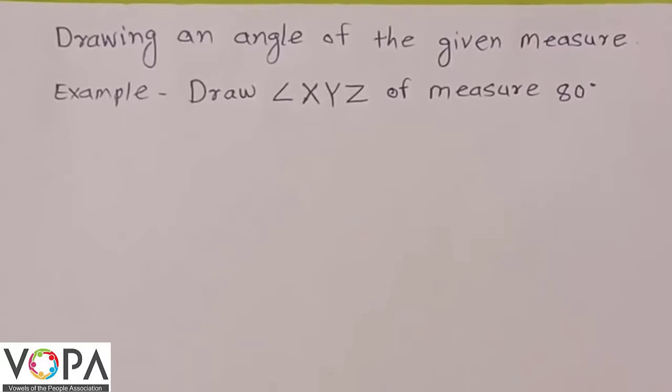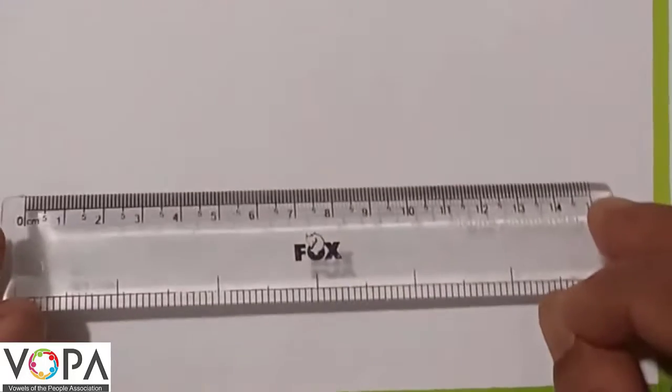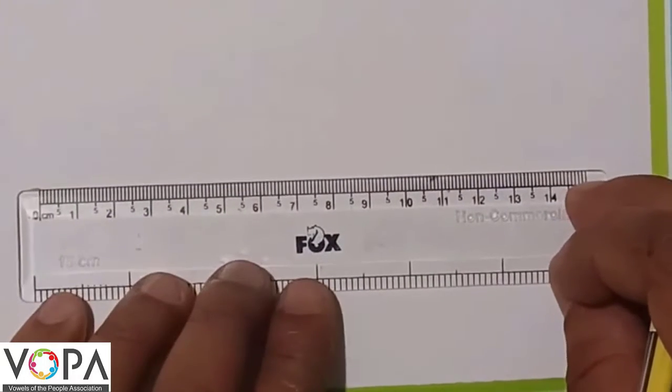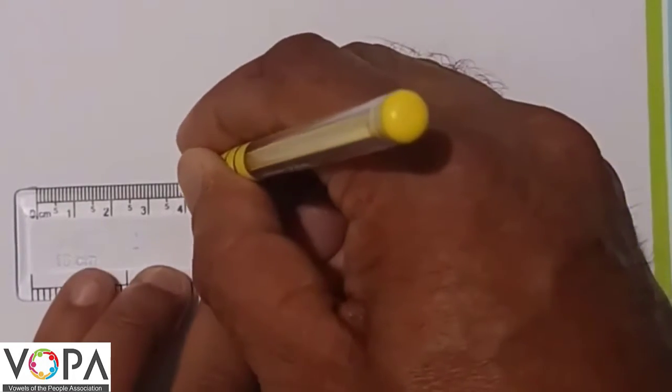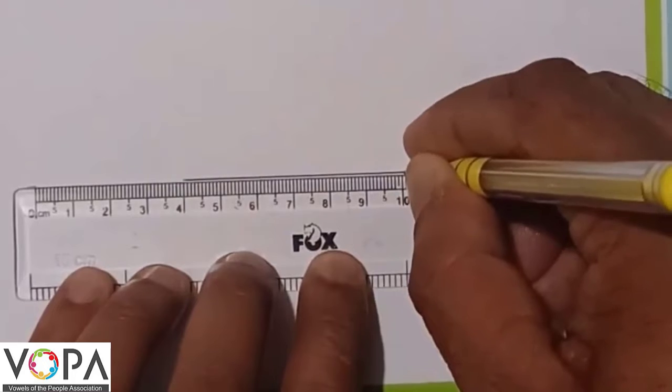Hello friends, today we are going to learn drawing an angle of the given measure. Example: Draw angle XYZ of measure 80 degrees. First, draw arm YZ. Take the ruler and draw the arm YZ and name this point